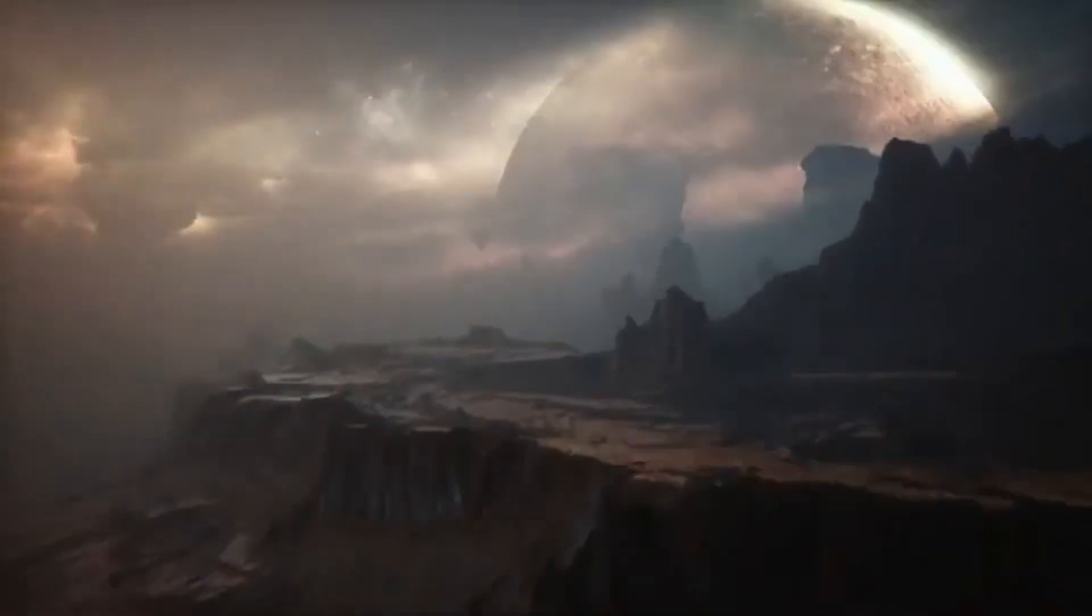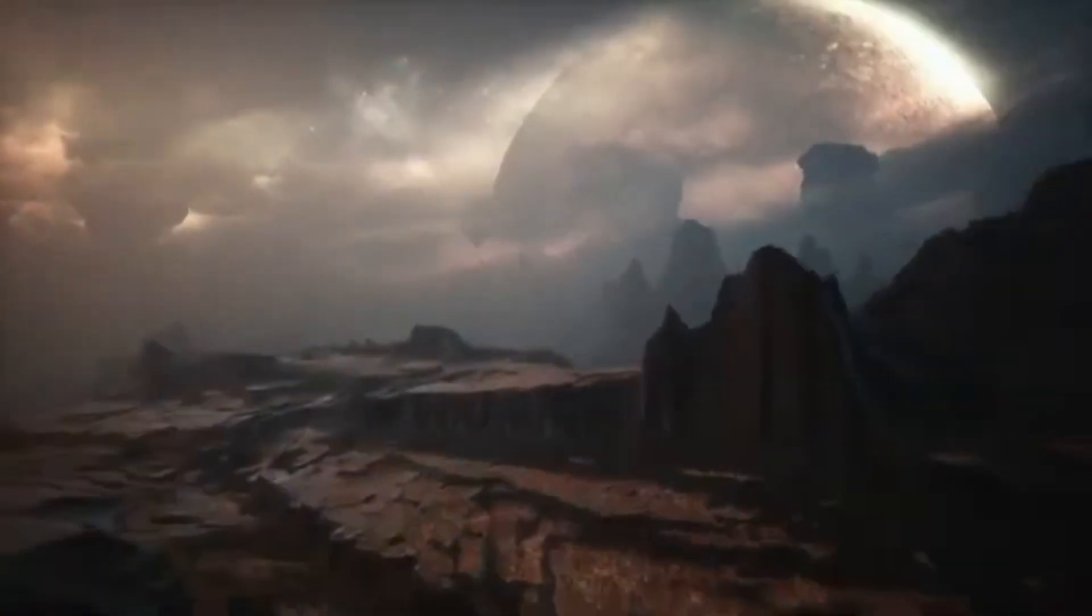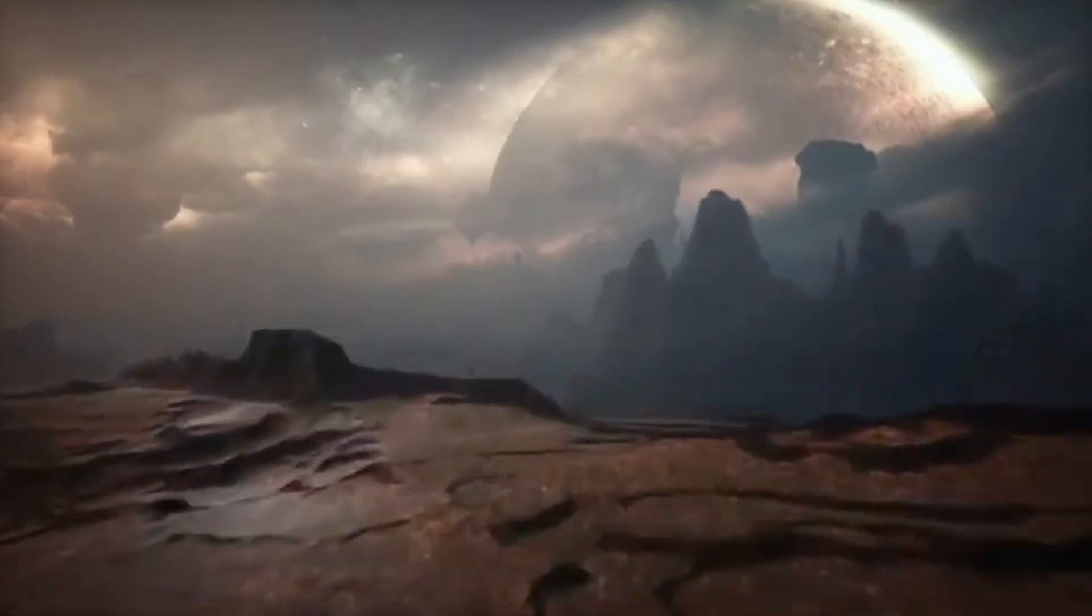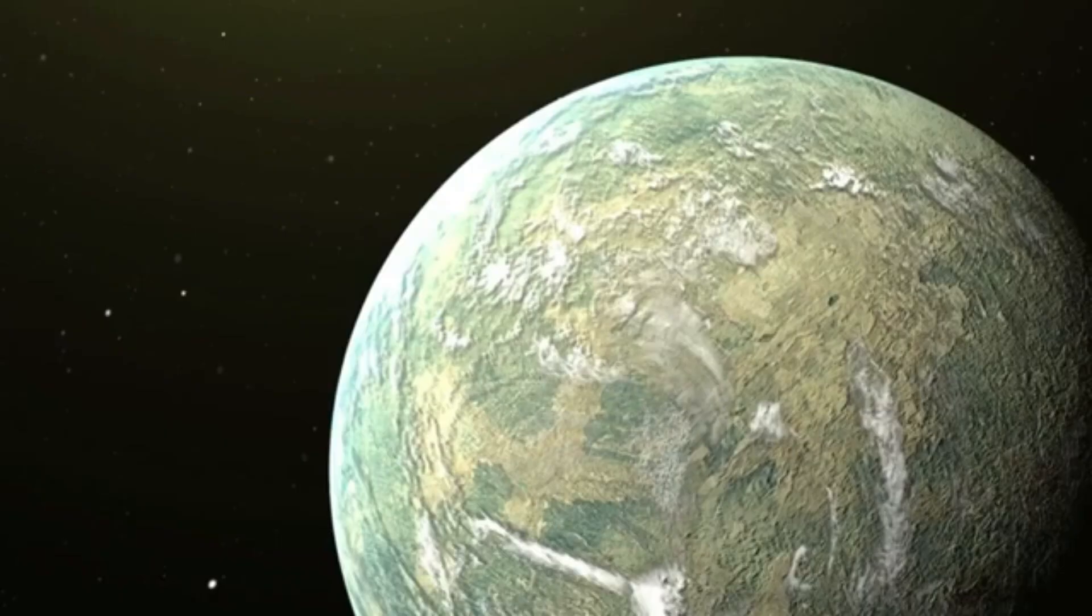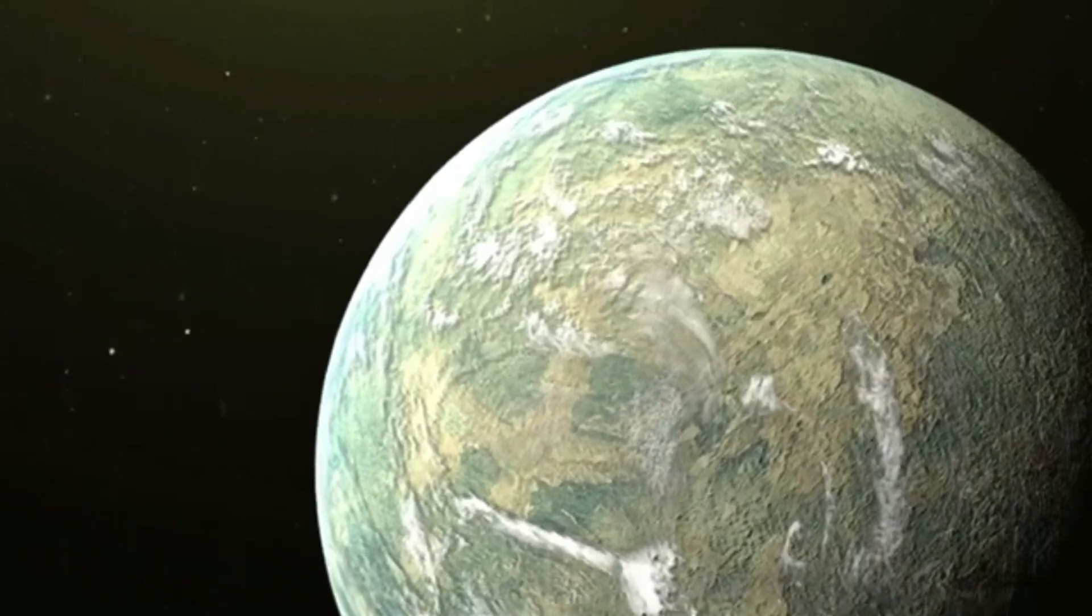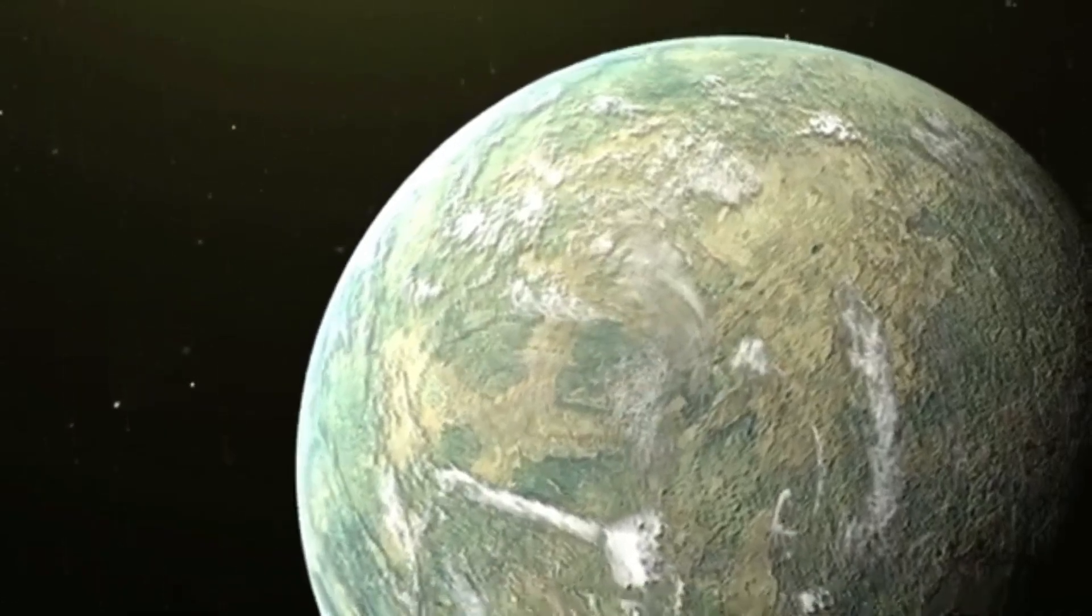Specifically, the telescope focused its powerful instruments on Proxima Centauri b, the closest known exoplanet to our solar system. It recorded mysterious bright flashes that have raised the tantalizing question: Could these lights be evidence of an alien civilization?